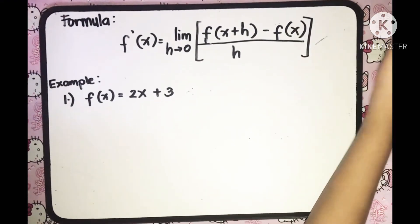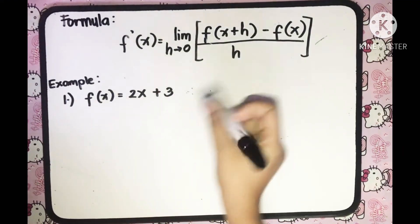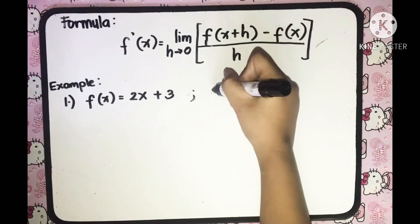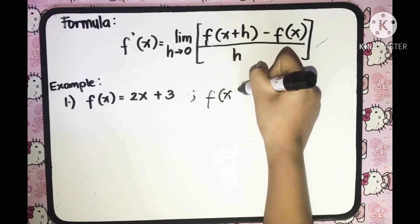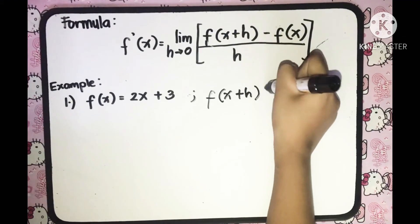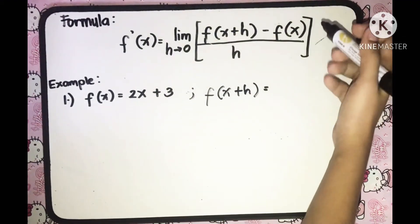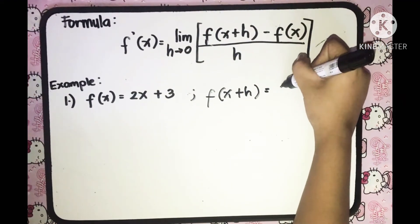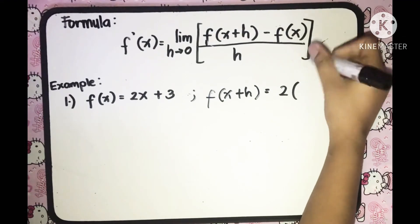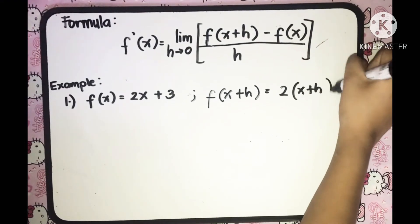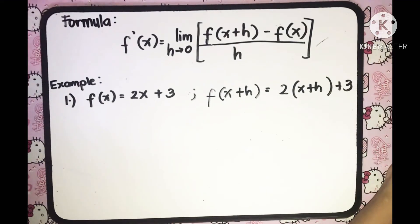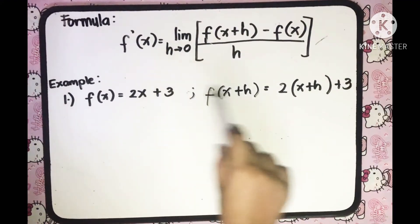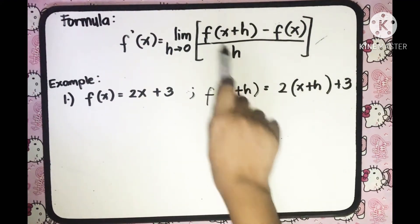So f of x is equal to 2x plus 3, while f of x plus h — how do we obtain this? We are going to substitute x plus h into the variable x of the function f of x. Substituting, we will have 2 multiplied by x plus h, plus 3. Now, using the definition of the derivative, let us substitute these two functions into the given formula.